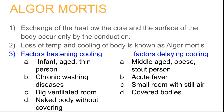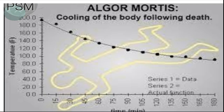The factors influencing algor mortis are divided into factors hastening cooling and factors delaying cooling. Factors hastening cooling include infants, aged and thin persons, chronic wasting diseases, big ventilated rooms, and naked bodies without covering. Factors delaying cooling include middle-aged obese or stout persons, acute febrile conditions, small rooms with still air, and covered bodies. A graph showing temperature versus time illustrates the cooling of the body following death.